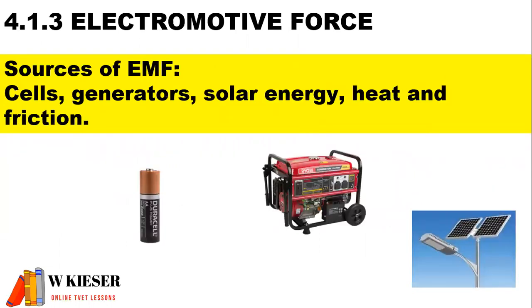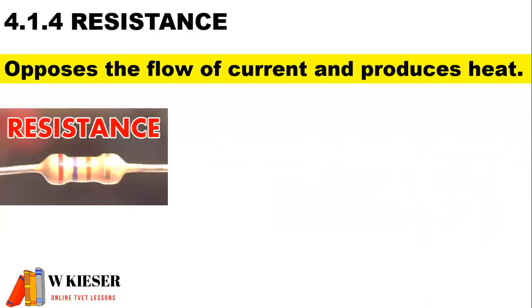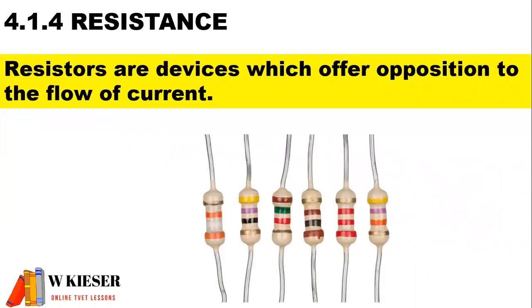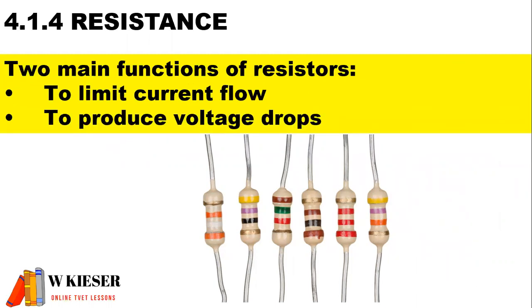Different sources of EMF are cells, generators, solar energy, heat and friction. To define resistance: it opposes the flow of current and produces heat. Resistors are devices which offer opposition to the flow of current. There are two main functions of resistors: to limit current flow and also to produce voltage drops in our circuits.